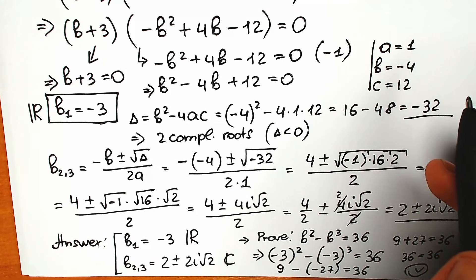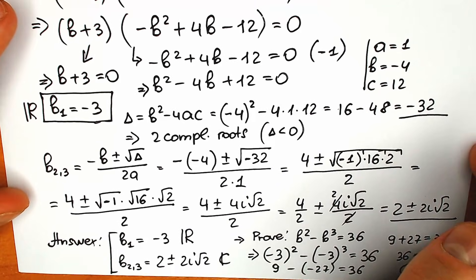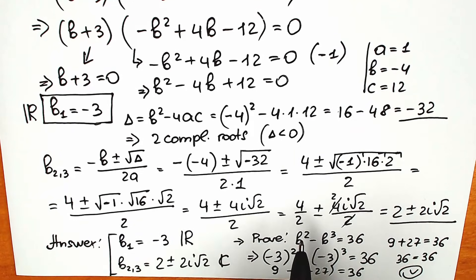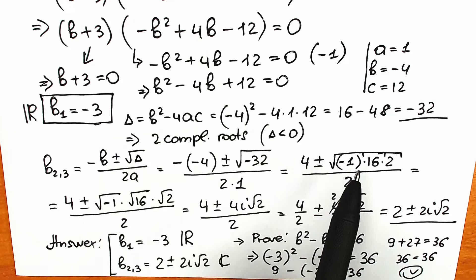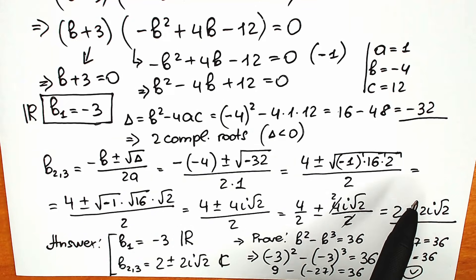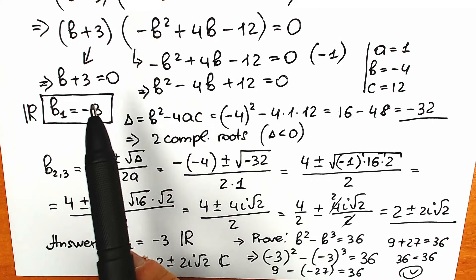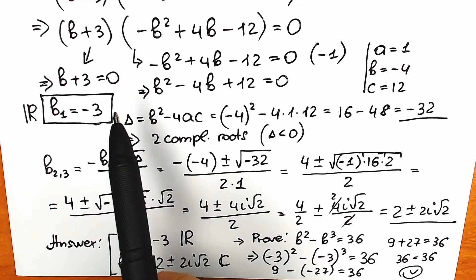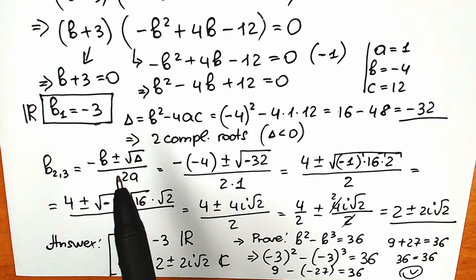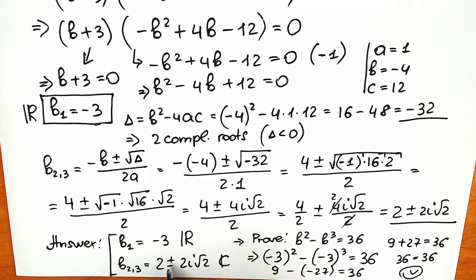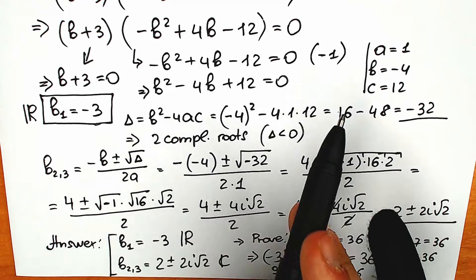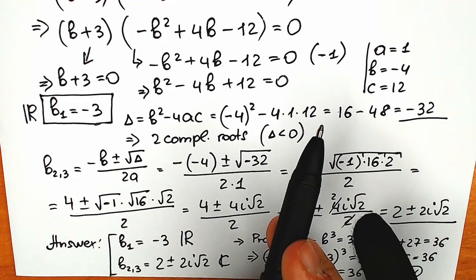The fundamental theorem of algebra tells us how many roots we can get from different equations. Right here we have a cubic equation — 3 is the highest power, so we have three roots in total. A quadratic equation has 2 as the highest power, giving two roots. A linear function has power 1 and one root. This helps us check our work: sometimes you get one real and two complex, or two real and one complex — different combinations are possible.